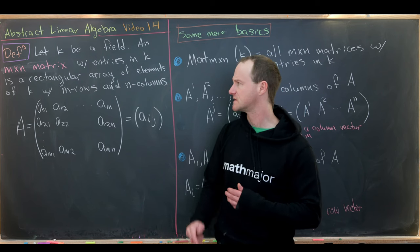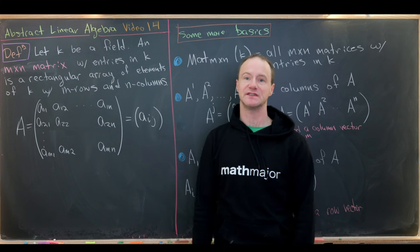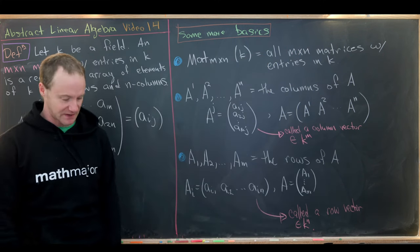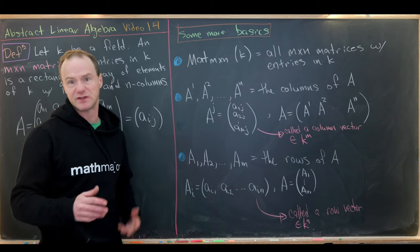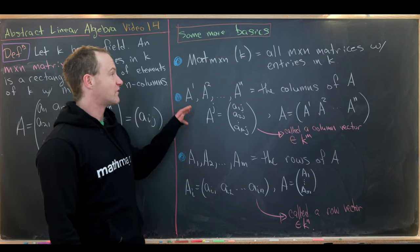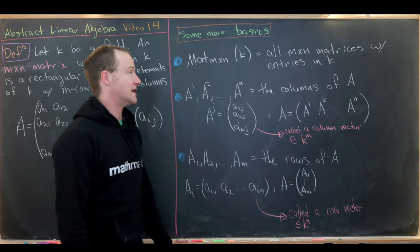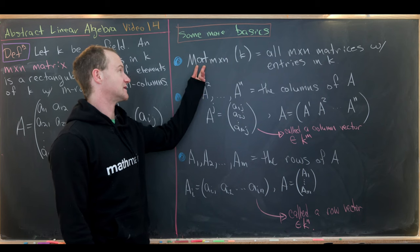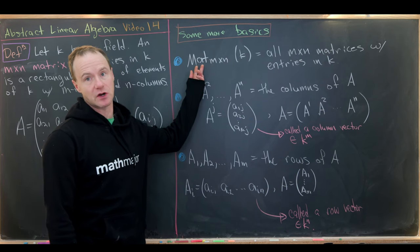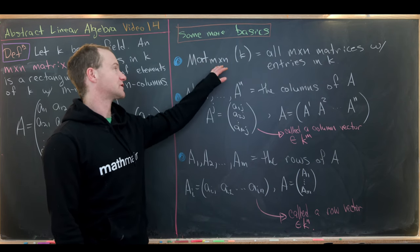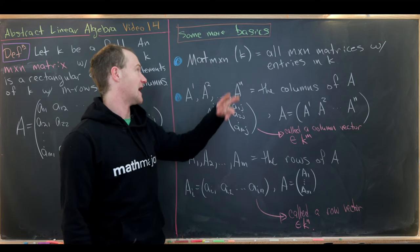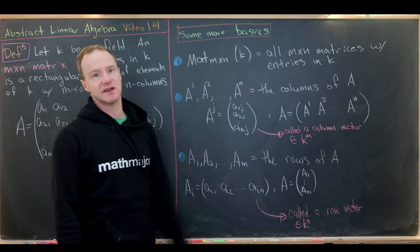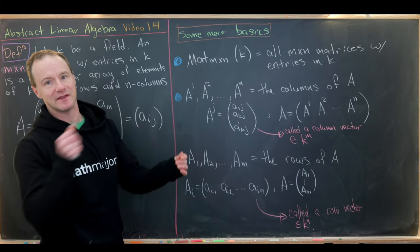Before we look at some of the arithmetic of matrices, I want to introduce a couple more basic concepts that will help us later. First, the set of all M by N matrices with entries in K is denoted MAT_M×N(K) — so 'MAT' like the start of the word matrix, underscore M by N K. That gives us the size of our matrix and the field from which we're taking the entries.